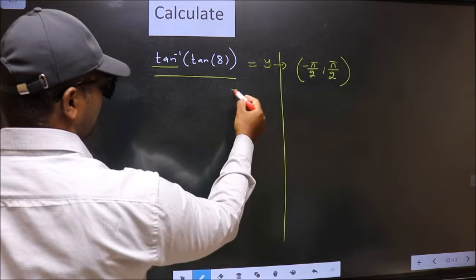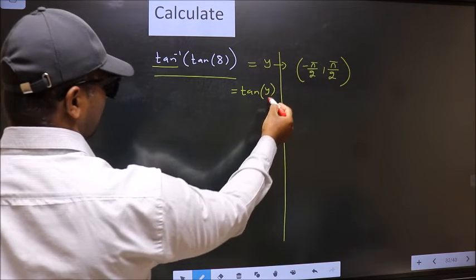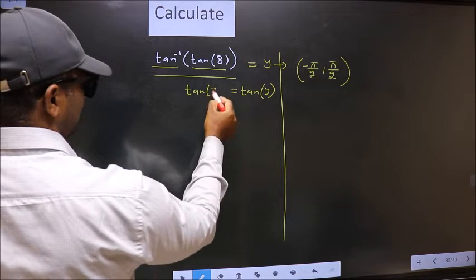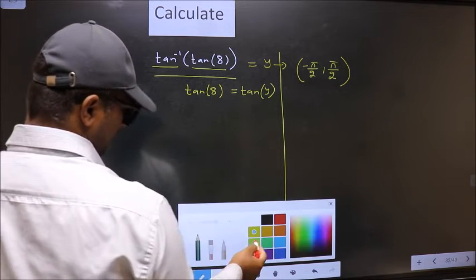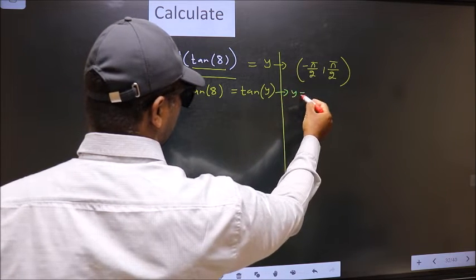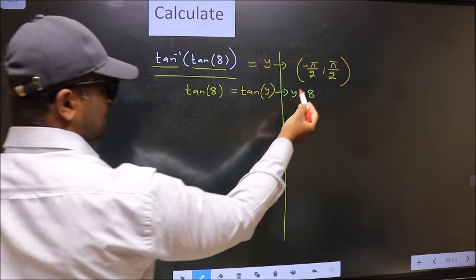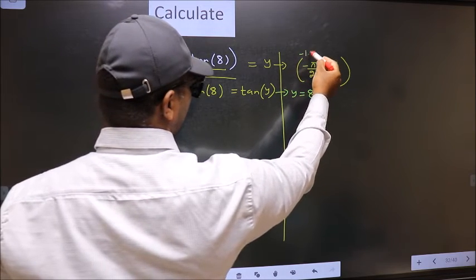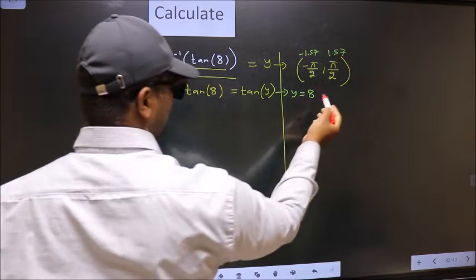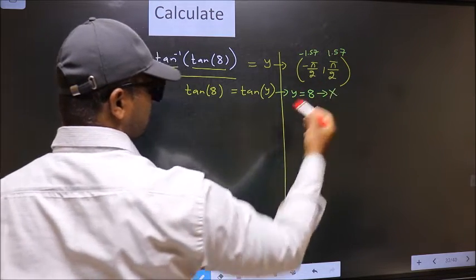Shift tan inverse to the other side — it will become tan of y, and on the other side no change. Now comparing both sides, we get y to be 8. Does 8 lie in this interval? This is minus 1.57 and this is plus 1.57. 8 does not lie in this interval, so we should reject this answer.